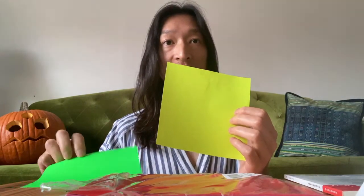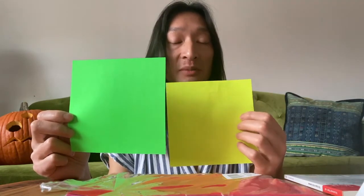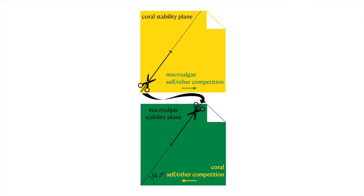We first have the yellow piece of paper, which represents the stability plane of the corals, and then the green piece of paper that represents the stability plane of the macroalgae. These origami planes are where the maximum eigenvalue is zero. When that eigenvalue is negative, it indicates stability, so the color side of these papers indicates where either coral or macroalgae are stable on their own. The white flip side is where the eigenvalue is positive — where the single species cannot exist stably on its own.